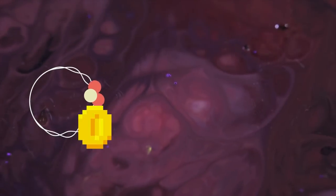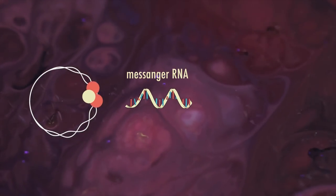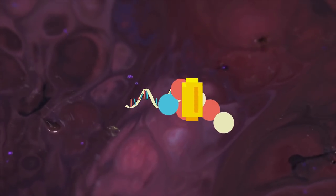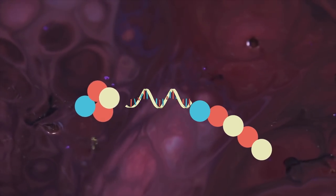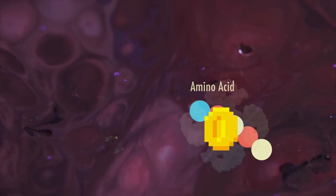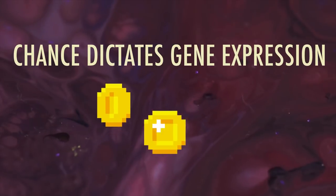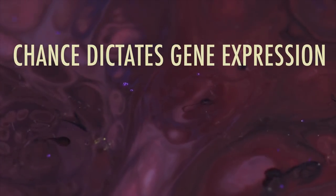Together, we've shown the theory behind stochastic gene expression and how it can be tested experimentally. Randomness in gene expression is omnipresent, and cells must learn to control and exploit it, or be controlled and exploited by it. Chance dictates gene expression, and by extension, cell fate.